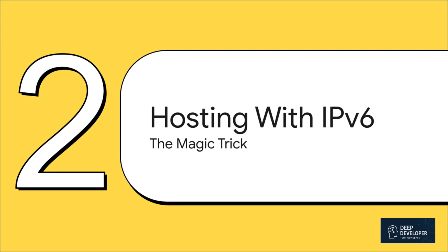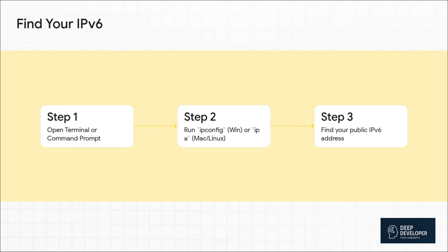So how do we actually use this thing? Believe it or not, it's way easier than you might think. We can get a public server running on your laptop in just a few super simple steps. First things first, you've got to find your new public address. If you're on Windows, just open up the command prompt and type ipconfig. If you're on a Mac or on Linux, pop open your terminal and type ip a. You're going to see a wall of text, but don't worry — we know exactly what we're looking for.